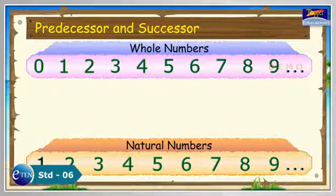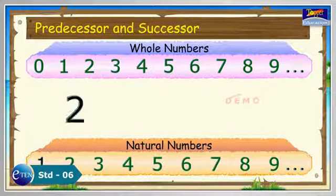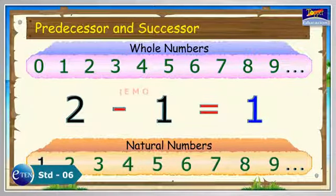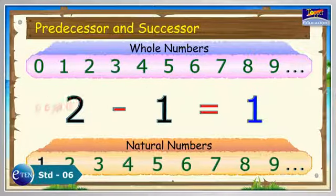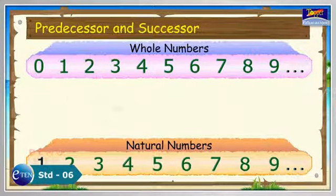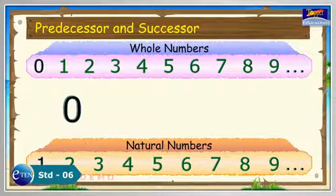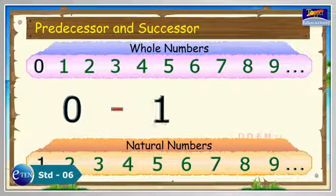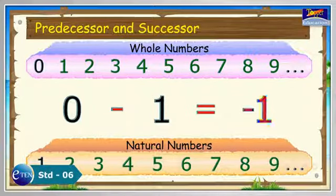Except 1, all natural numbers have predecessors which are also natural numbers. The whole number 0 does not have a predecessor, as 0 minus 1 is not a whole number.